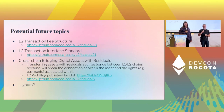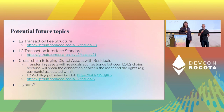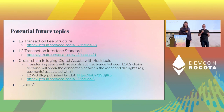We have many ideas for potential future topics: Layer 2 transaction fee structures, Layer 2 transaction interface standards. One idea that's gotten discussion is cross-chain bridging of digital assets with residuals. The issue is that if you have a token — like an NFT representing a bond that gets royalties or payments over time — and you move it to another chain, it breaks the connection between the payments and the asset. That's not a completely solved problem, and we'd love more ideas.